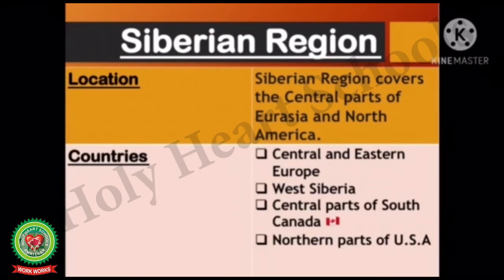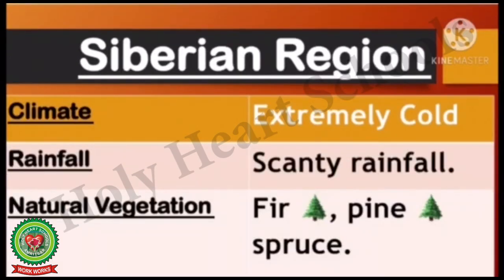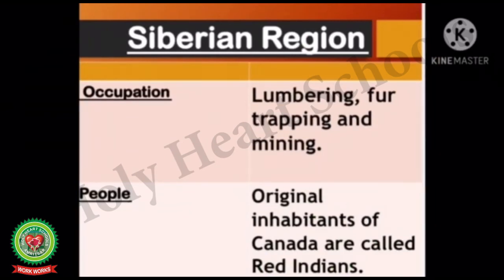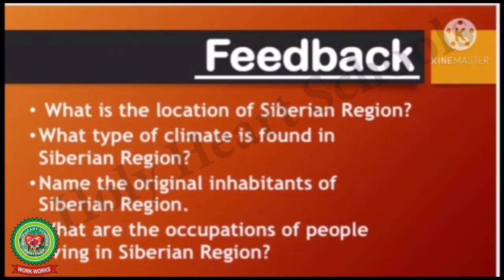To summarize: the Siberian region covers the central parts of Eurasia and North America, including Central and Eastern Europe, West Siberia, central parts of South Canada, and northern parts of the USA. The climate is extremely cold with scanty rainfall. Natural vegetation includes pine, fir, and spruce. Occupations are lumbering, fur trapping, and mining. The original inhabitants are called Red Indians.